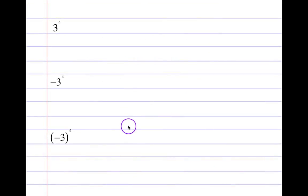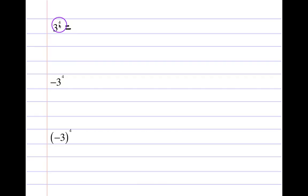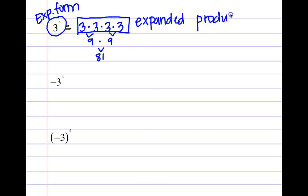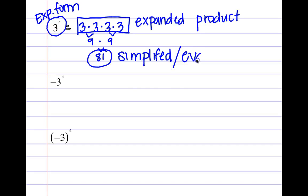Let's take some problems to practice. In this case, my base is three, so I'm going to repeat three. The exponent is four, so I'm going to repeat three four times: three times three times three times three. This is the expanded form. If they ask me to evaluate, I multiply it out — nine times nine — which equals 81. This is the exponential form, this is the expanded product, and 81 is our simplified or evaluated answer.